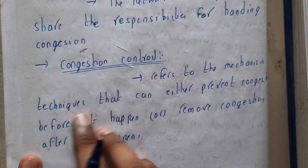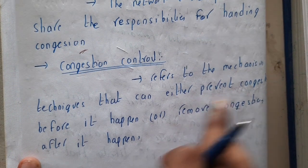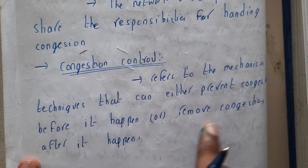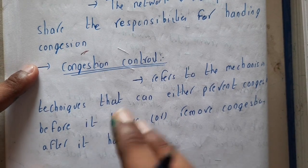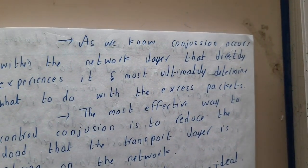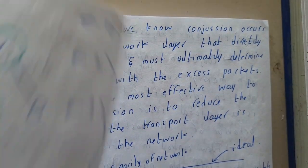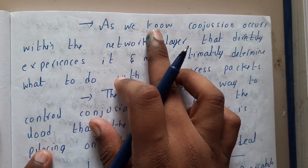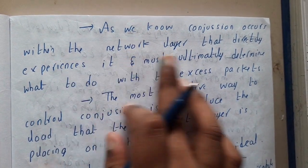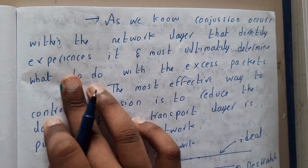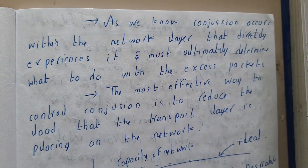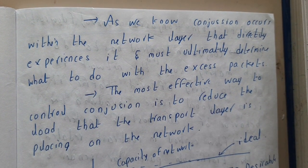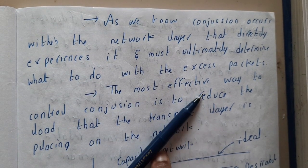Congestion control refers to the mechanism or technique that can either prevent congestion before it happens or remove congestion after it happens. Those are the two basic mechanisms. Congestion occurs within the network layer that directly experiences it and must ultimately determine what to do with the excess packets.